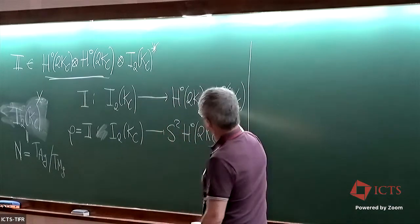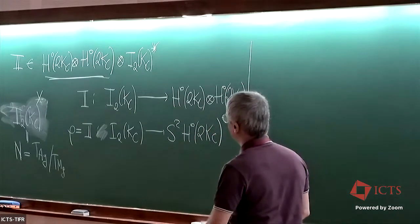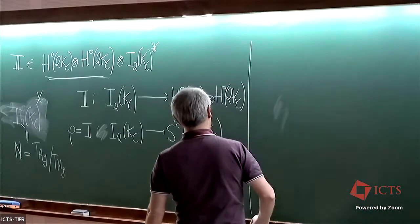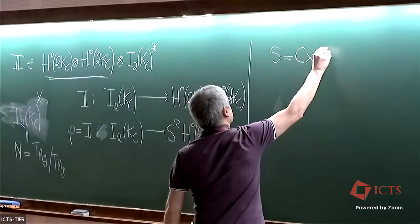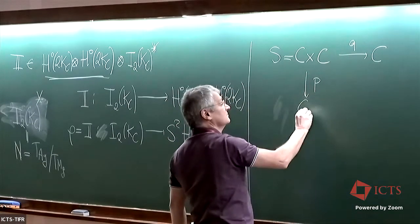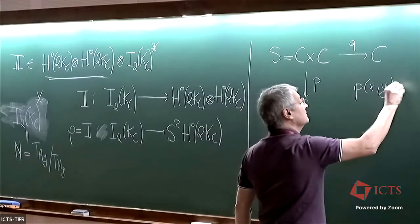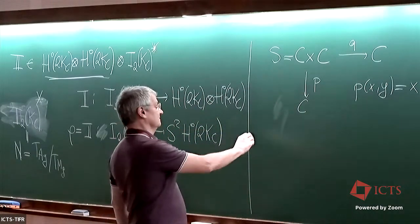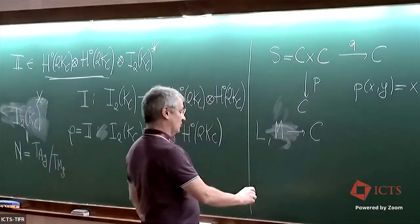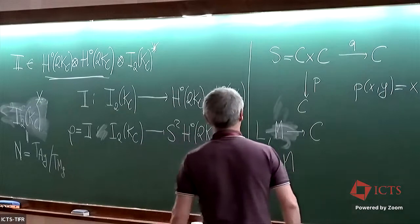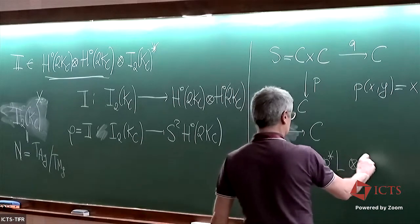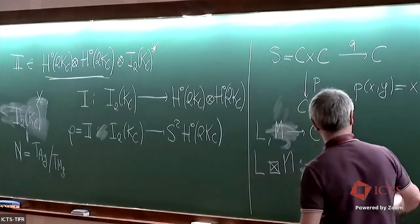We have all these tensors and tensor products. When one has tensor products of spaces of sections, it is useful sometimes to consider the product manifold. In our case this is this surface, which comes with two projections: P is the first one and Q is the second. If one has line bundles on the curve, one can consider this kind of square tensor product, which is a line bundle on the product manifold.